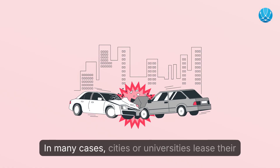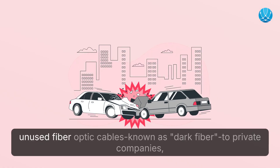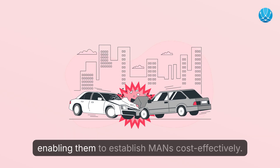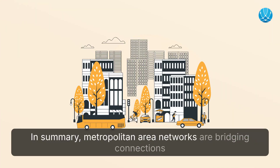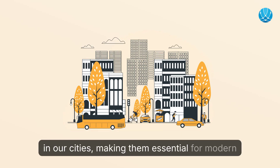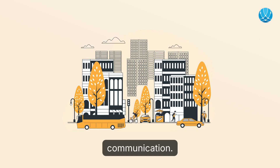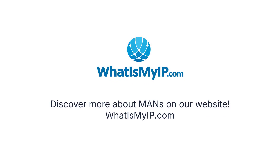The backbone of the network carries most of the data, ensuring swift communication among different LANs. In many cases, cities or universities lease their unused fiber optic cables, known as dark fiber, to private companies, enabling them to establish MANs cost-effectively. Metropolitan area networks are essential for modern communication in our cities.